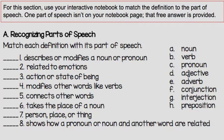We're going to match each definition with its part of speech. Number one: describes or modifies a noun or pronoun. The part of speech that describes or modifies a noun or pronoun is D, adjective. Number two: related to emotions. The part of speech related to emotions is G, interjection.